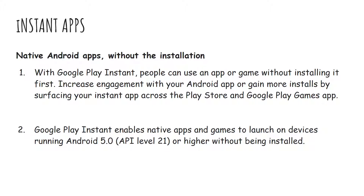So first of all, what are instant apps? In a single sentence, instant apps are just your Android apps but without the installation. Generally, if you want to use any application on your phone, you have to go to the Play Store, click install, and then you can use it. But Google Play has given us a feature where we can actually experience an application — its look and feel and some of its features — without having to install it.